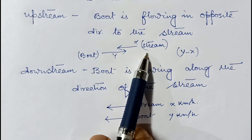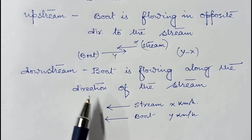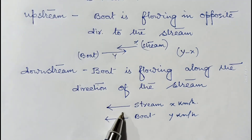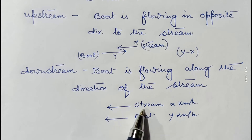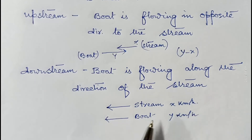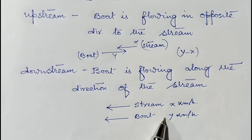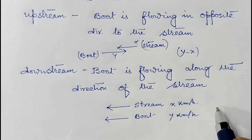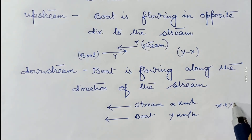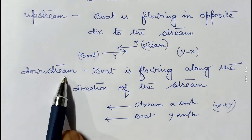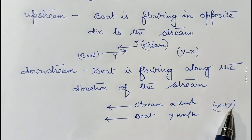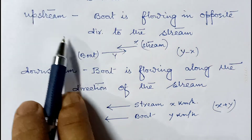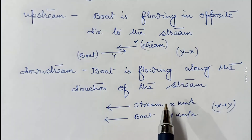In the case of downstream, when the boat is flowing in the same direction as the stream — suppose the stream is flowing with a speed of x kilometer per hour and the boat is also moving in the same direction with a speed of y kilometer per hour — then the net speed will be x plus y. So remember: during downstream speed is x plus y, whereas during upstream speed is y minus x.